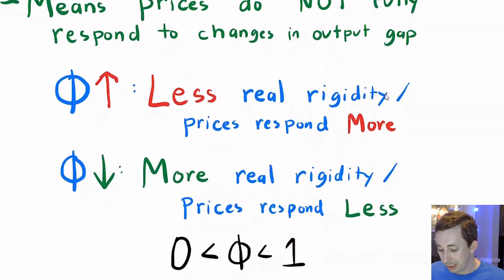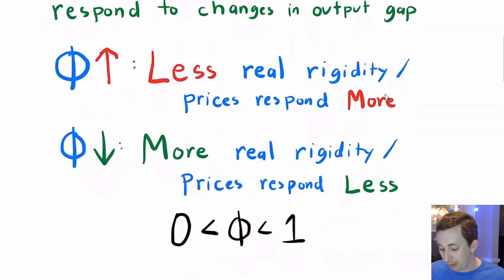So if I have a larger real rigidity parameter, that means I have less real rigidity because I have more responsiveness. And if I have more responsiveness, I have less rigidity. If I have a smaller Φ or a smaller real rigidity, I'm going to have less responsiveness, more real rigidity.